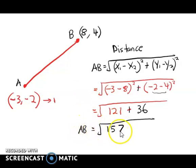So AB equals the square root of 157, which equals 12.529, but we can round it off to 12.53. This is the answer for AB.